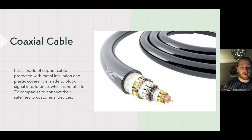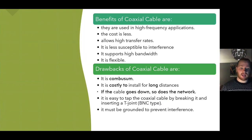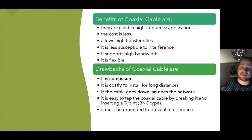Coaxial cable is made of a copper cable protected with metal insulation and plastic covers. It is designed to block signal interference, which is helpful for TV companies to connect their satellites to customers' devices. The benefits of coaxial cable are that they have a high frequency for applications, they cost less than other cables, they allow for high transfer rates, they are less susceptible to interference, and they support a high bandwidth and are quite flexible.